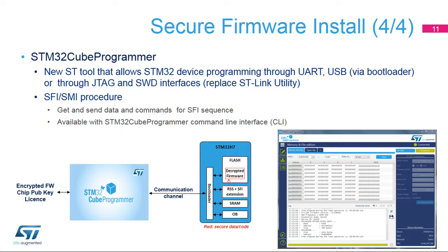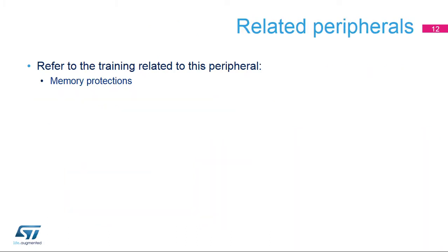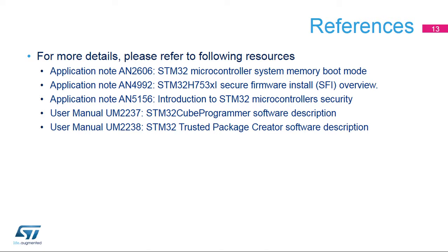You can get ST's flasher tool, STM32CubeProgrammer, on ST.com or use one of our partners. Please refer to the flash memory protection training to learn more about the memory architecture, option bytes, and flash operations. Detailed descriptions of the RSS concept are available in the following application notes: AN-2606 describes the bootloader feature, AN-4992 describes the SFI procedure in detail, and AN-4925 gives an example of the secure user memory. User manuals for STM32CubeProgrammer and STM32TrustedPackageCreator are also available on the ST website.